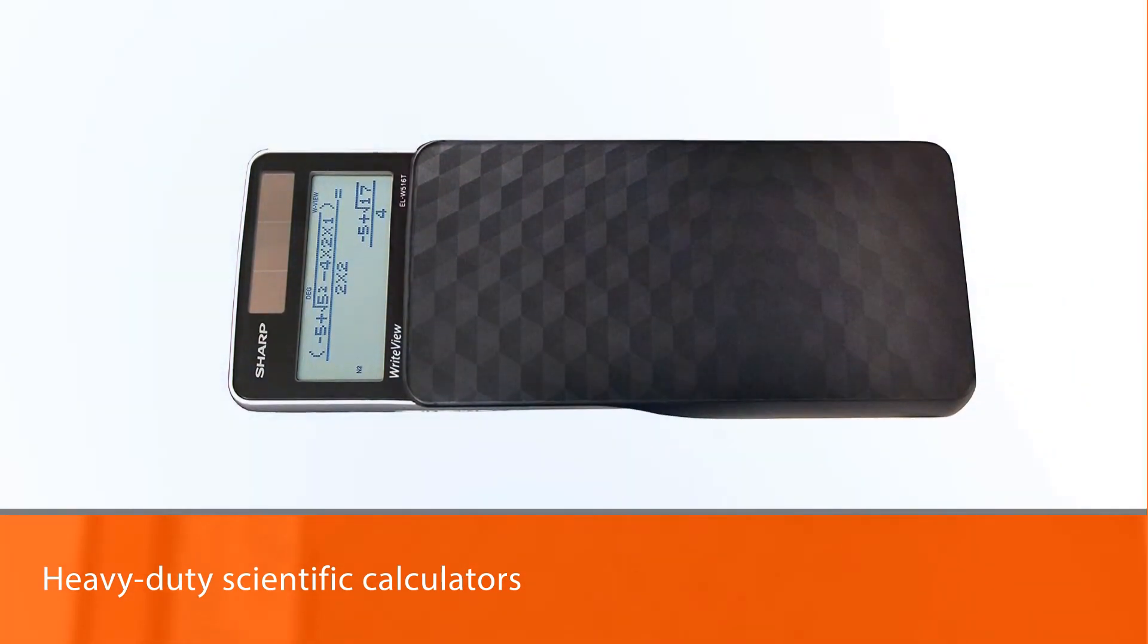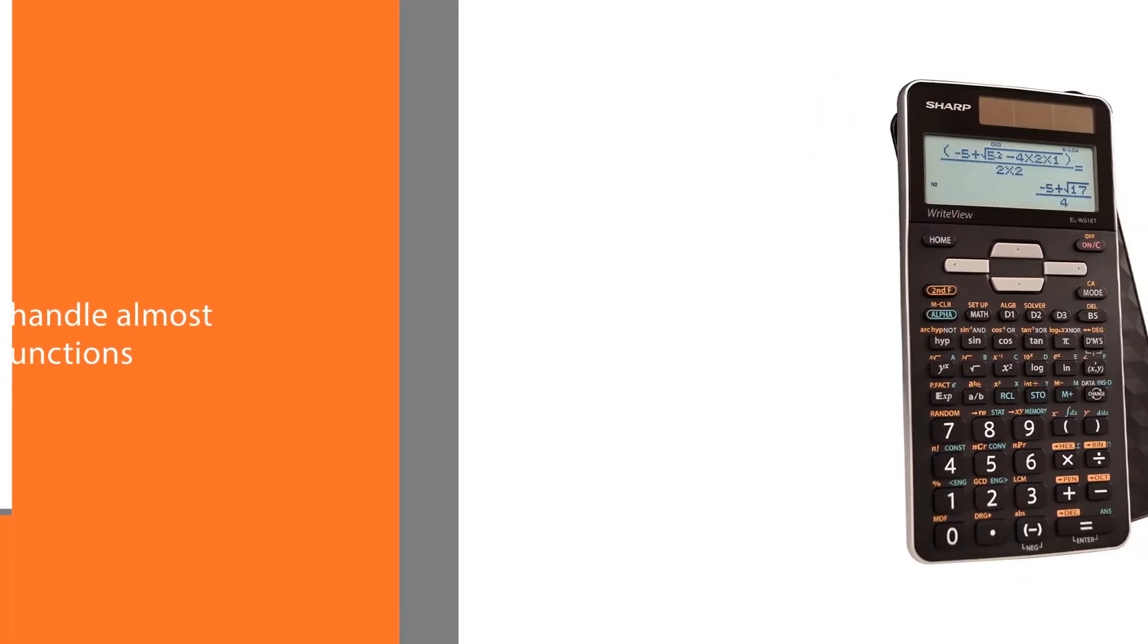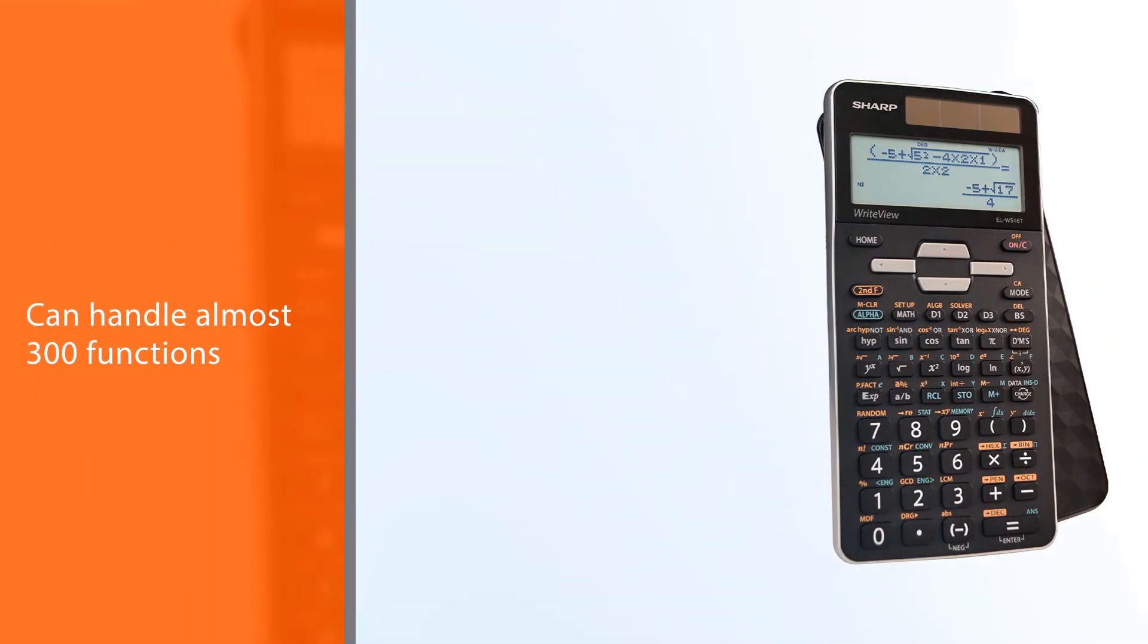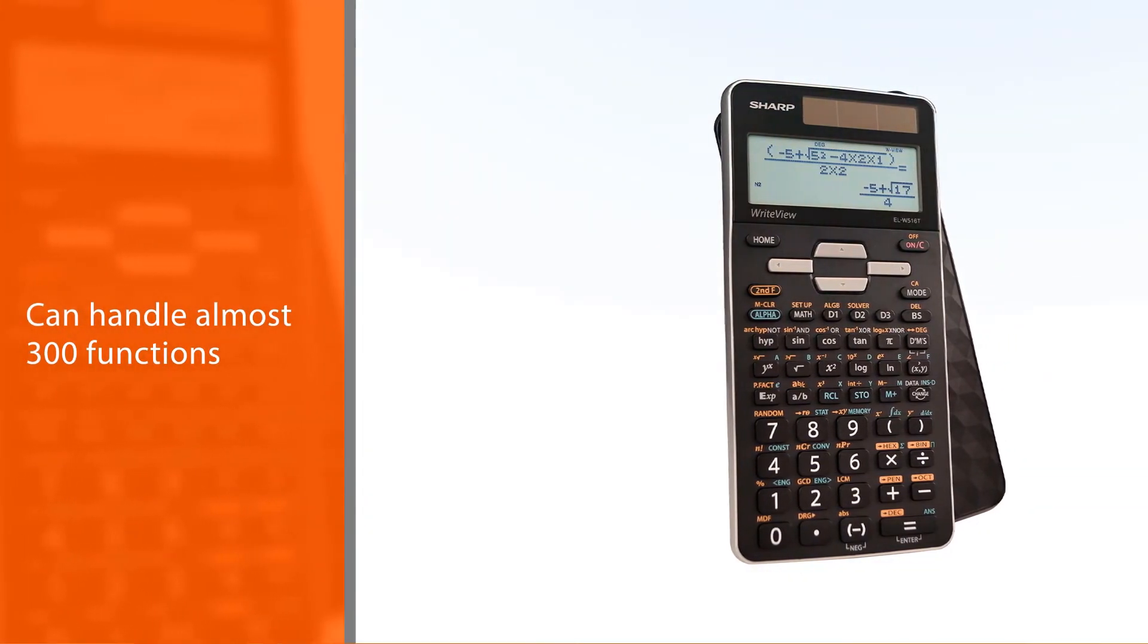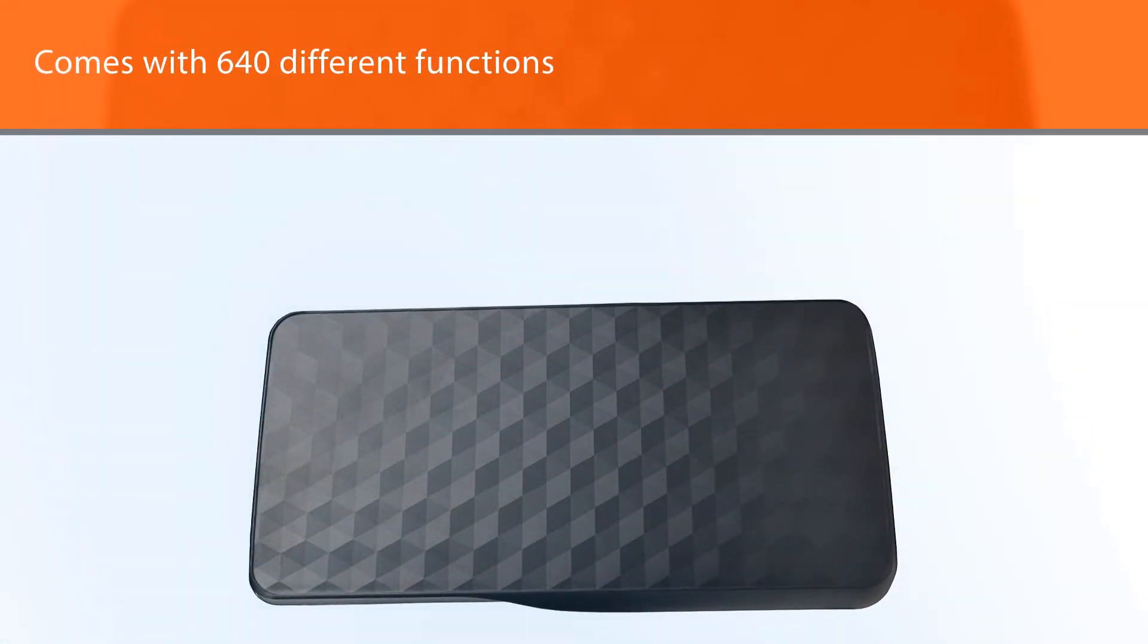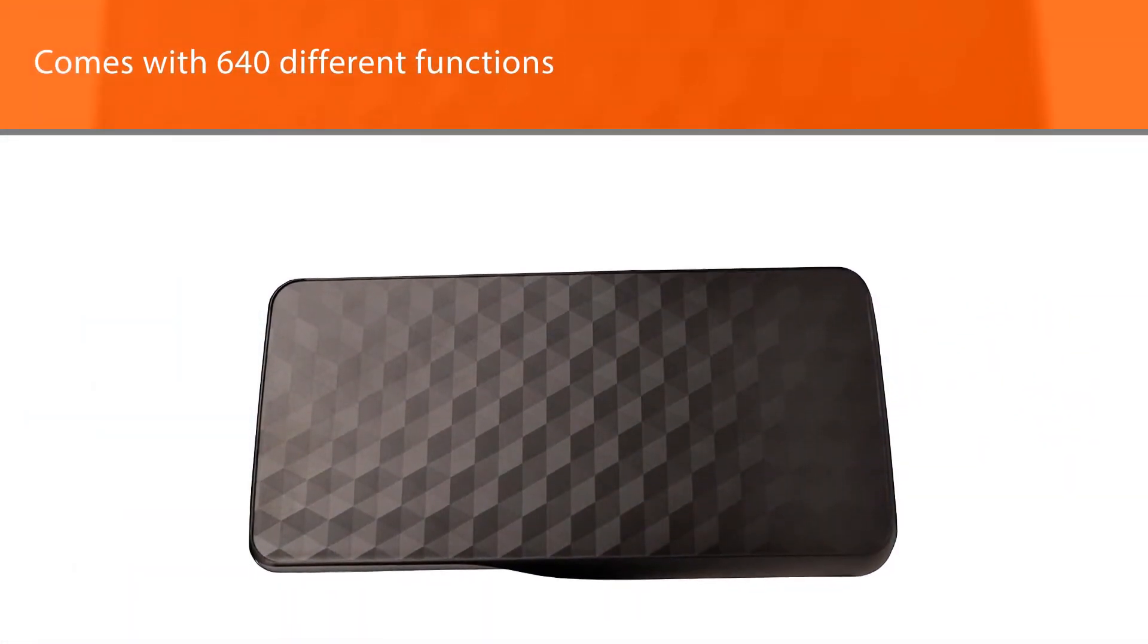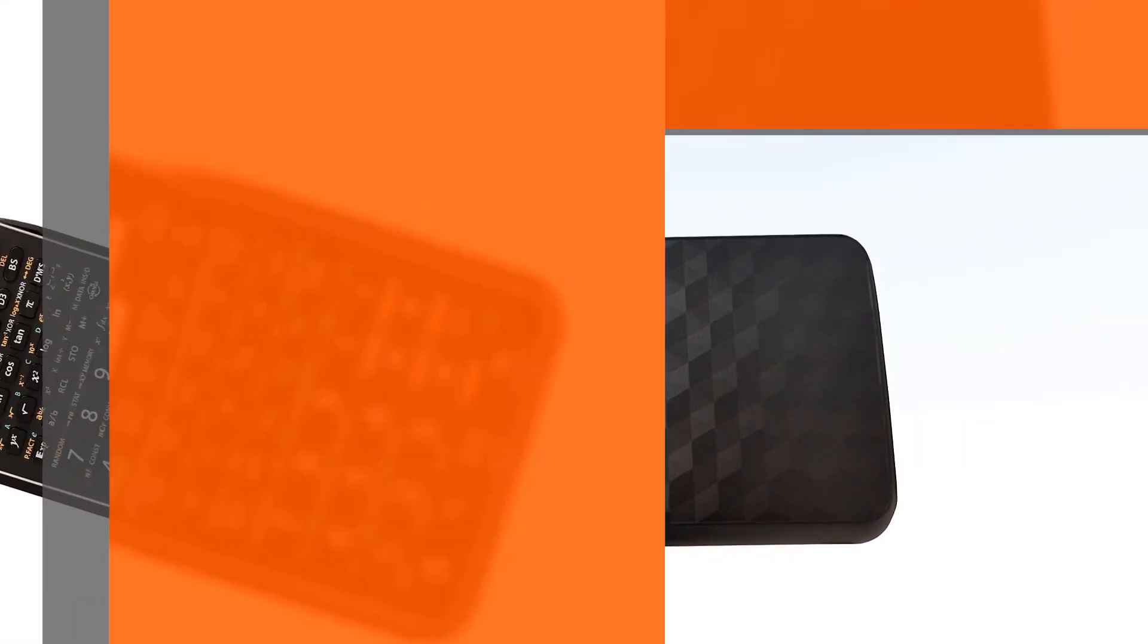The SHARP EL WT516TBSL is a model that can make even the most difficult math problems run away with their tail between their legs. Some of the others we've seen so far can handle almost 300 functions, but this one goes above and beyond with 640 different functions on offer.